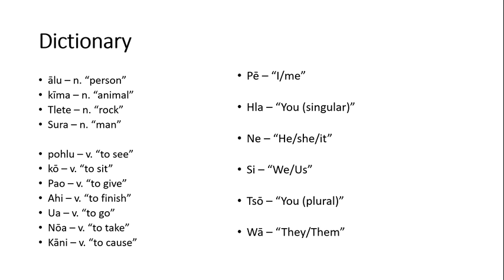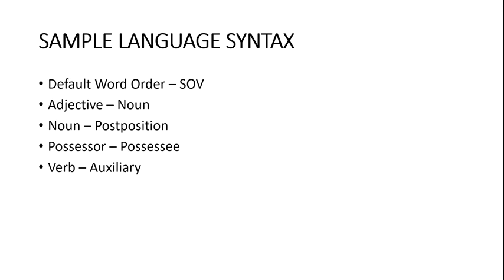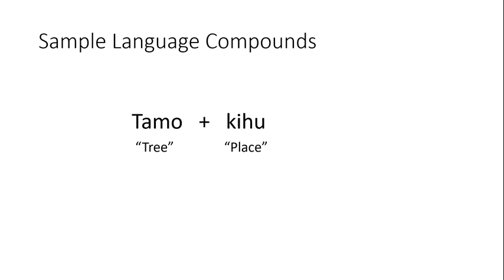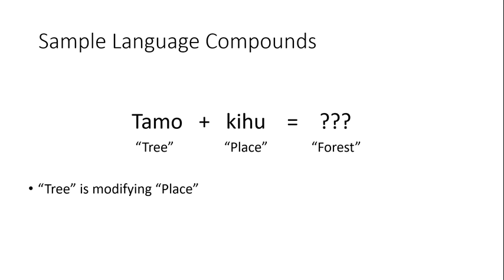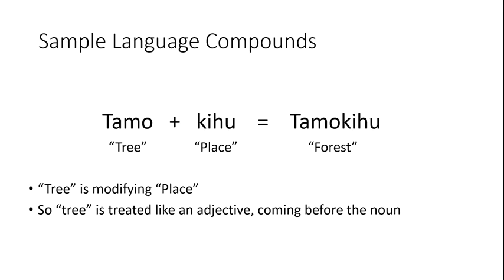But how can we go about making more complex words? The most basic solution is compounding, where two words occur together with such frequency that they become conjoined. This is where your basic word order comes into play. Let's say we wanted to make a compound of tree and place, to make a noun that means the place where there's trees, or perhaps a forest. In this case, tree is modifying place — we're not talking about a place tree. So tree and place will occur together in the same word order as a noun and an adjective would, so in our language, tree will come first.